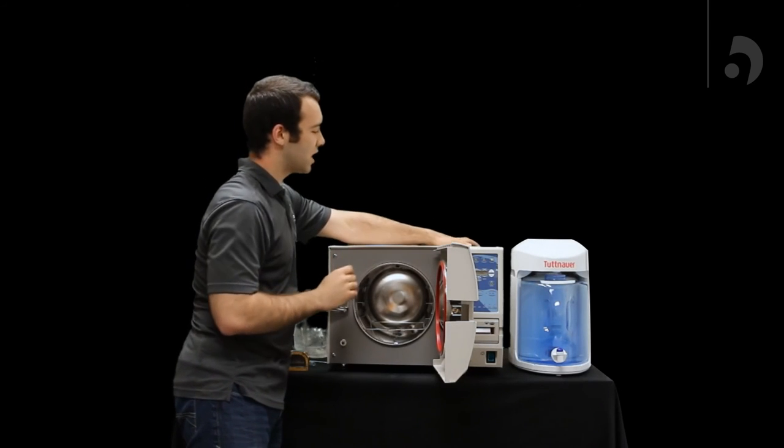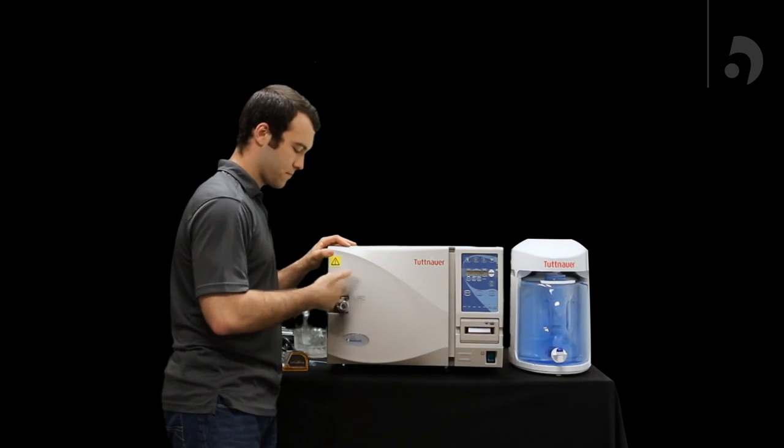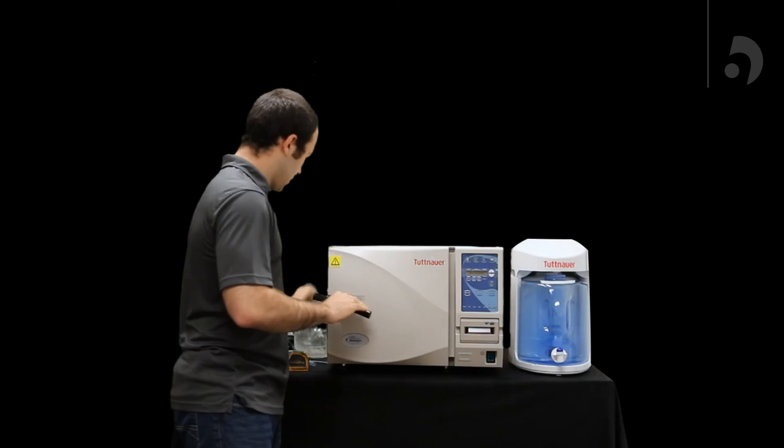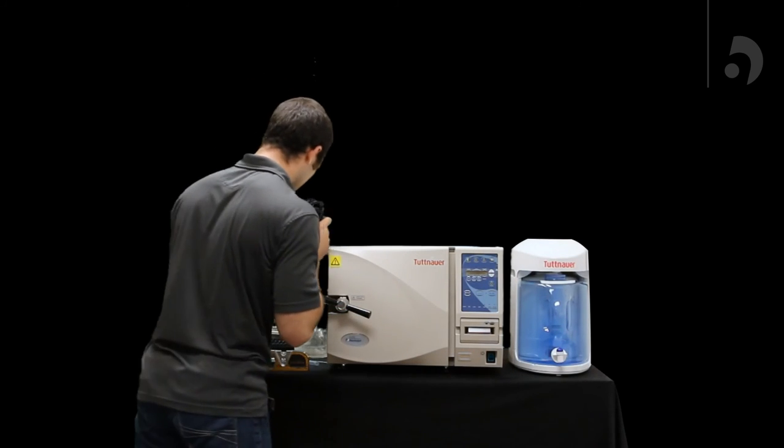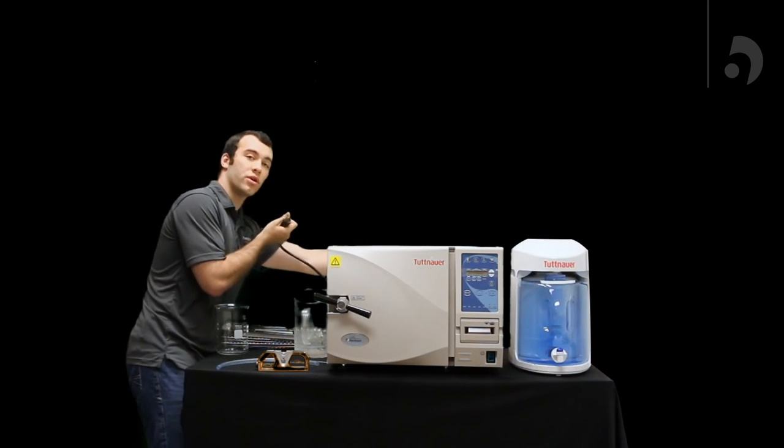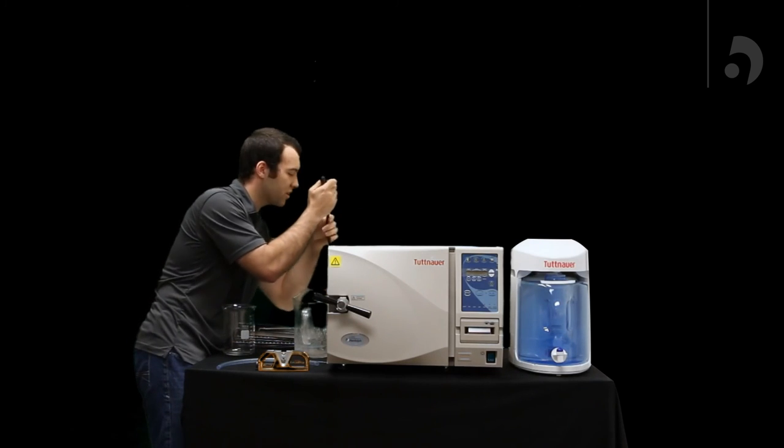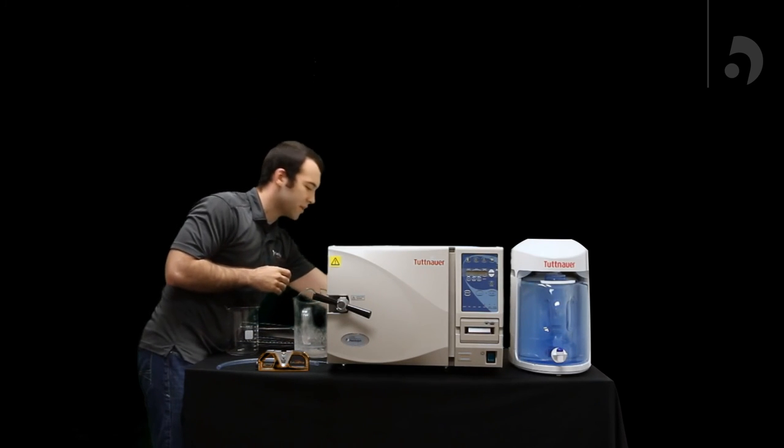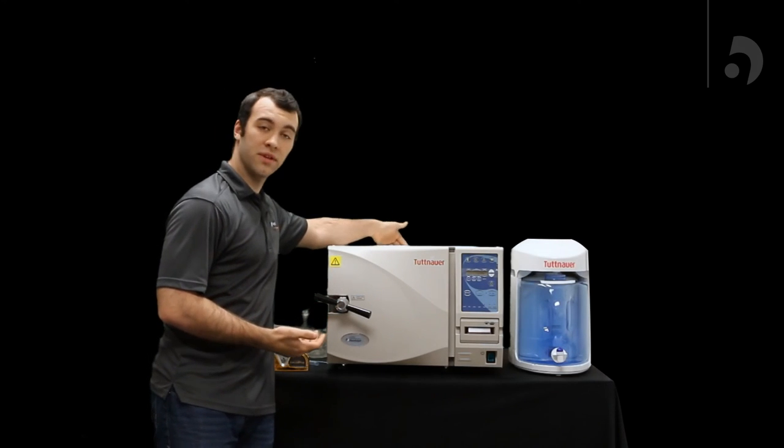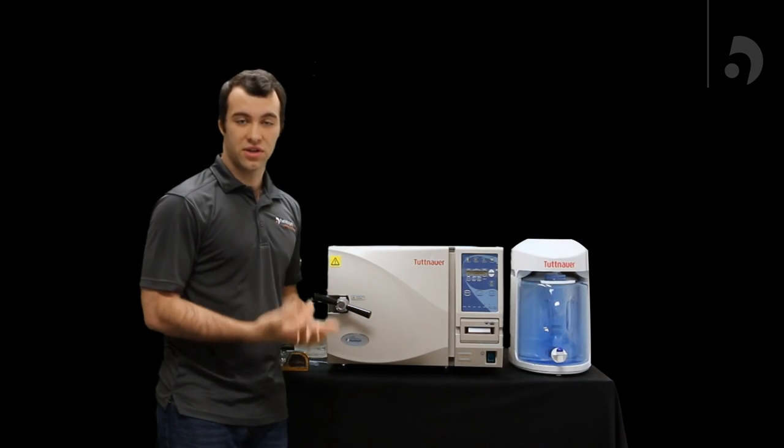Now, you're going to toss your reservoir cap back on and close your chamber. And we can go right into plugging in your power cord. You'll find that's in the bottom corner of the unit. And then just plug the other side into an outlet. Now, once that's all good to go, you can flip the switch in the back, flip the switch in the front, and you're ready to start sterilizing.